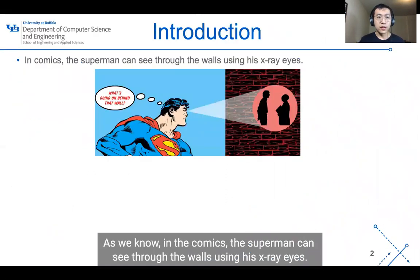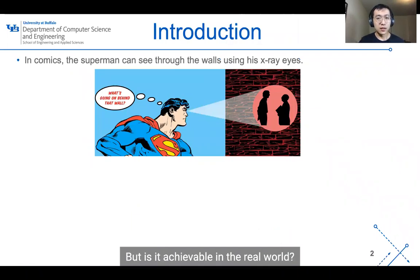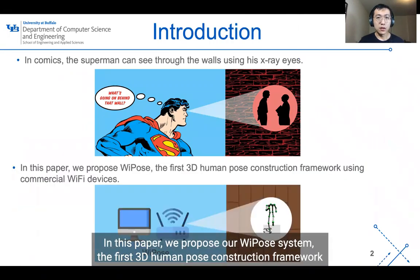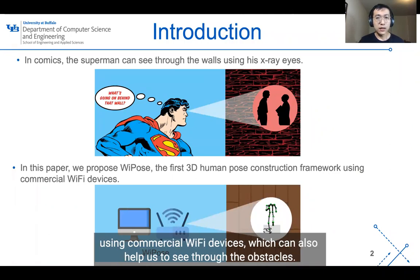As we know, in the comics, Superman can see through walls using his X-ray eyes, but is it achievable in the real world? In this paper, we propose our Wi-Pose system, the first 3D human pose constructing framework using commercial Wi-Fi devices, which can also help us to see through obstacles.